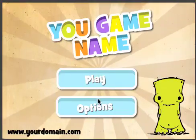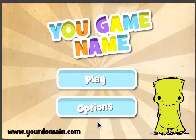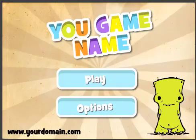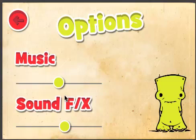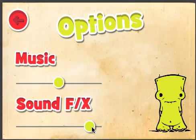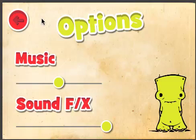So we have Play and Options. I'll go into Options first. When we go into Options we have the Music Volume slider and the Sound Effects slider. It goes from 0 to 1. Music is the same thing, 0 to 1. We can hit back.